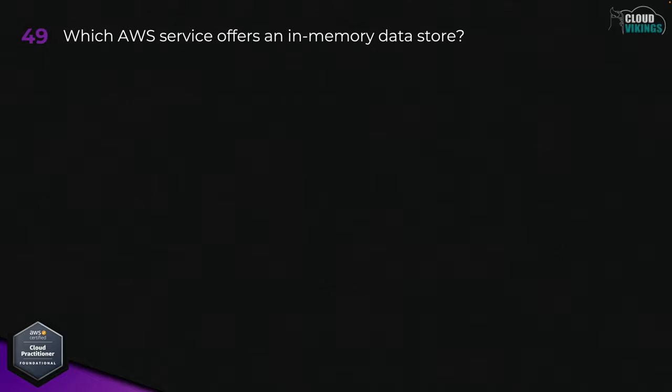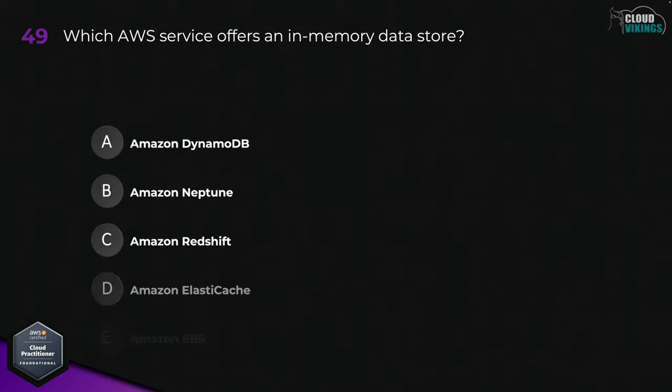Question forty-nine: which AWS service offers an in-memory data store? Options are: A, Amazon DynamoDB; B, Amazon Neptune; C, Amazon Redshift; D, Amazon ElastiCache; or E, Amazon EBS. The answer here is D, Amazon ElastiCache.